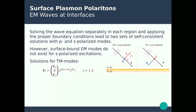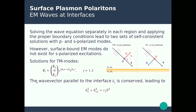Looking at the TM modes, you end up with an electric field that is a solution to the wave equation. You have the electric field in medium 1 and medium 2, with an X component parallel to the interface and a Z component orthogonal to the interface. These modes have a wave vector parallel to the interface — that's the K_x component — and this must be conserved as you cross the interface, meaning K_x1 in medium 1 must equal K_x2 in medium 2.